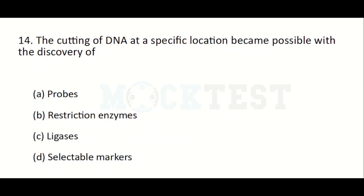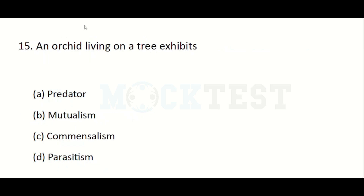The cutting of DNA at a specific location became possible with the discovery of: Option A: props. Option B: restriction enzymes. Option C: ligase. Option D: selectable markers. The answer is Option B, restriction enzymes.